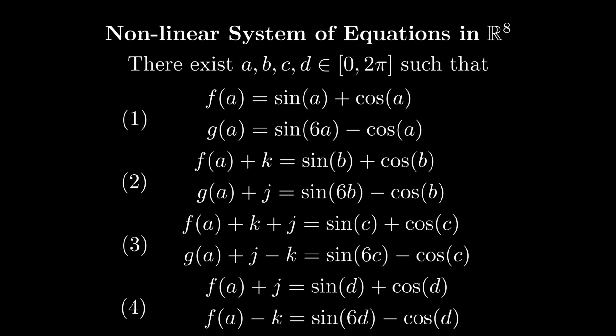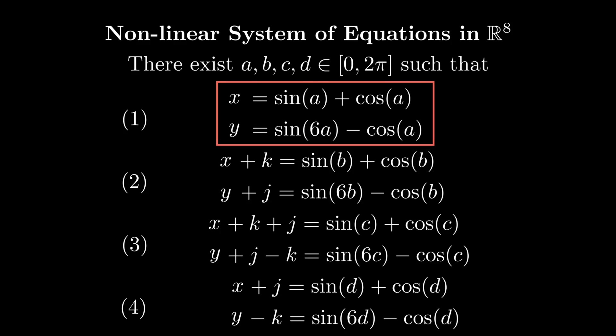we say a point is part of the curve means there exists a, b, c, d, in the interval from 0 to 2 pi for the parametric equations. Now let x equal f of a and y equal g of a. We see x and y are both in terms of a, so we can trade two variables for 1 and plug that into the other three equations. Then from the second pair of equations, we can solve for k and j, and then plug those into the remaining equations.